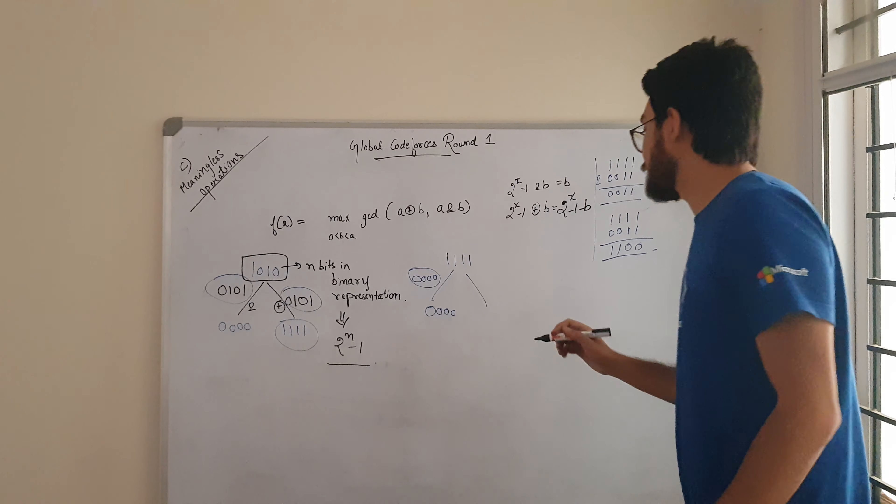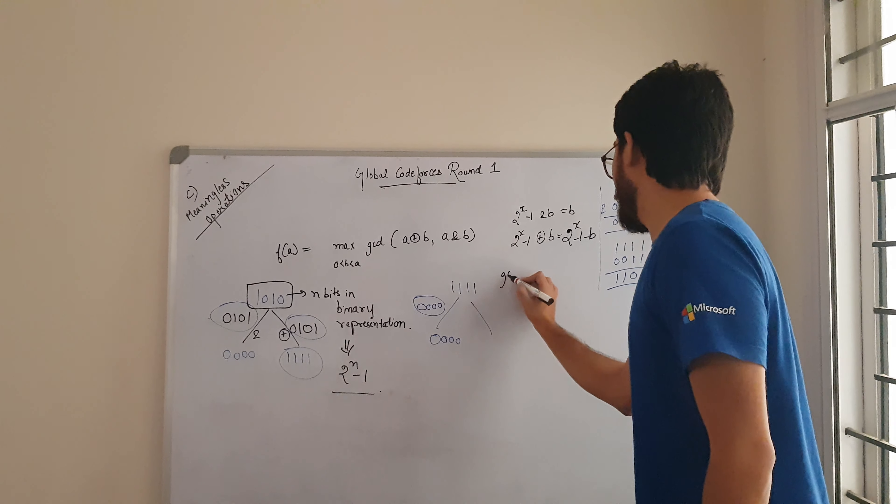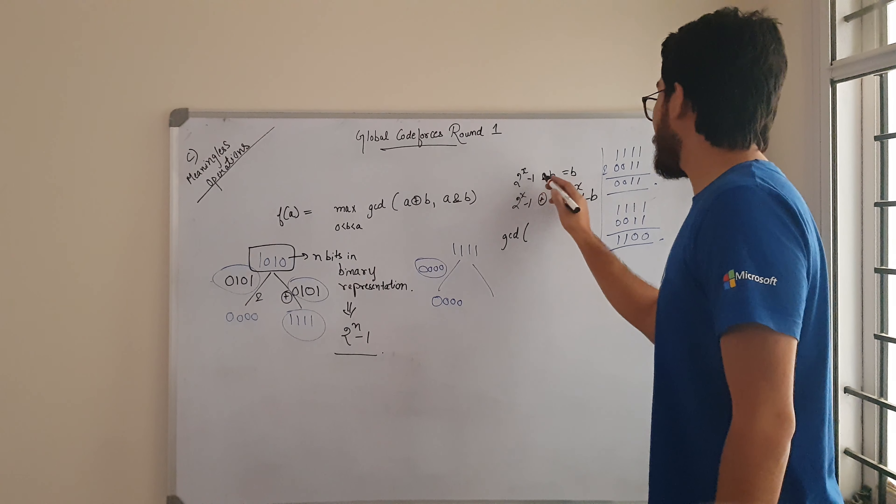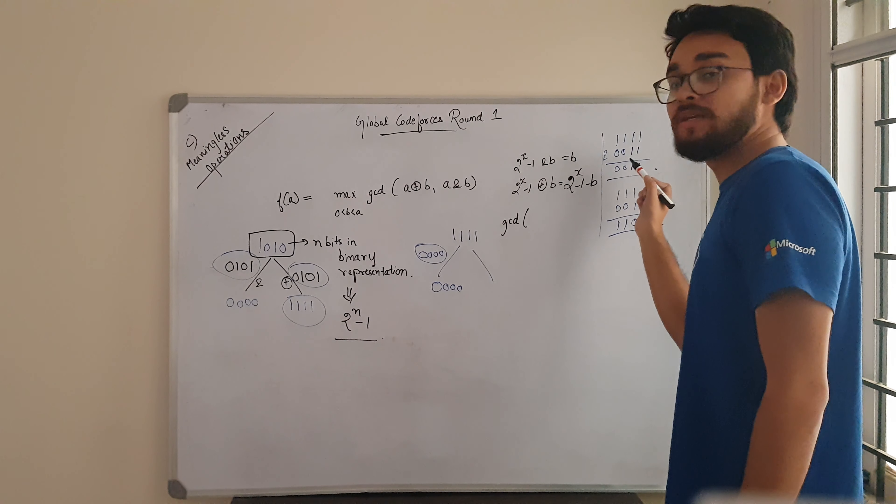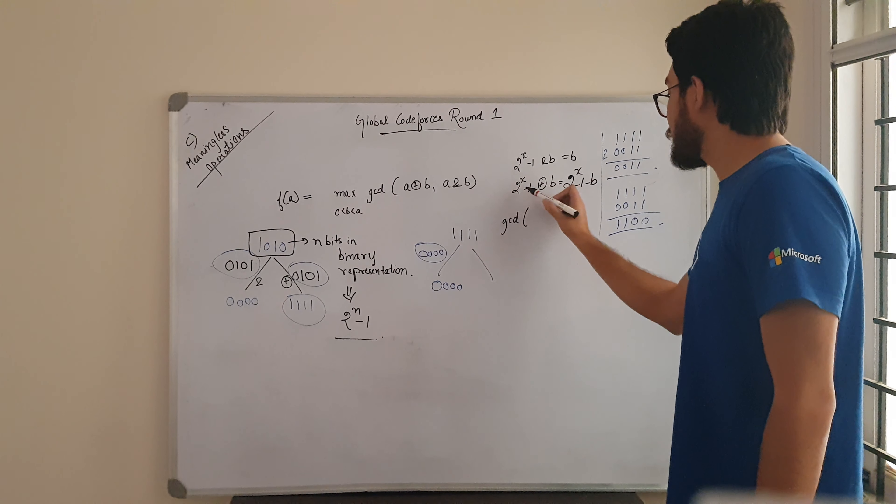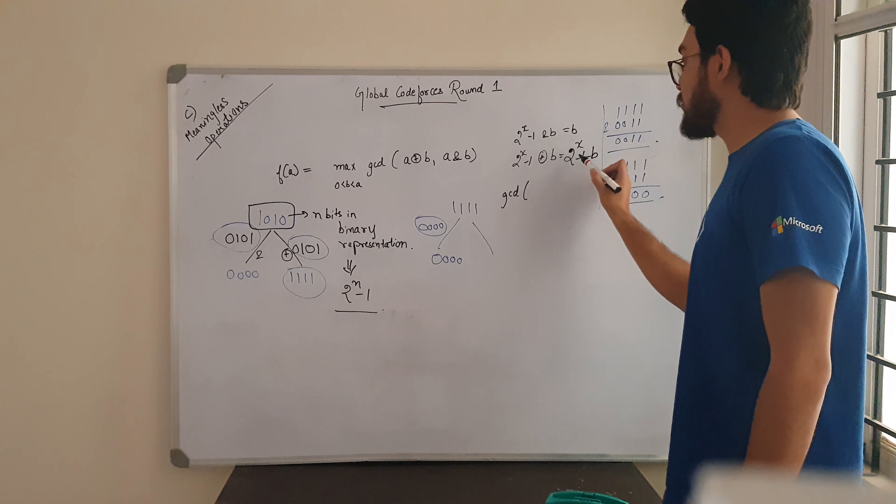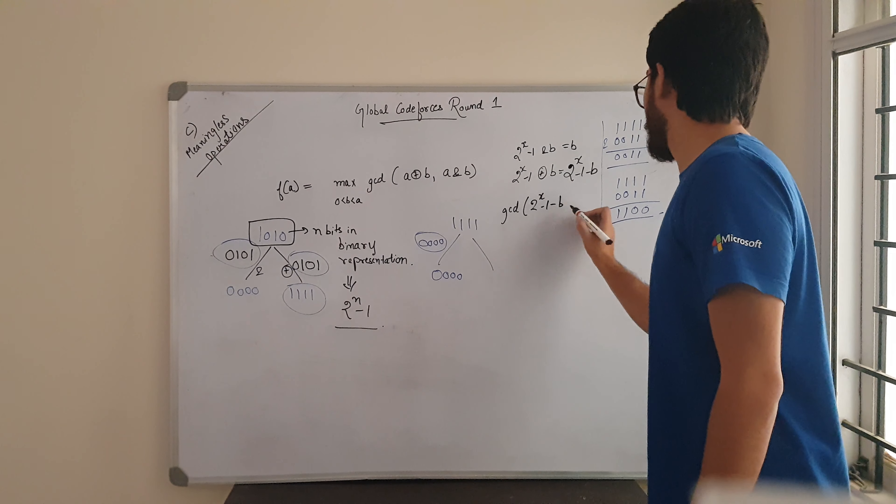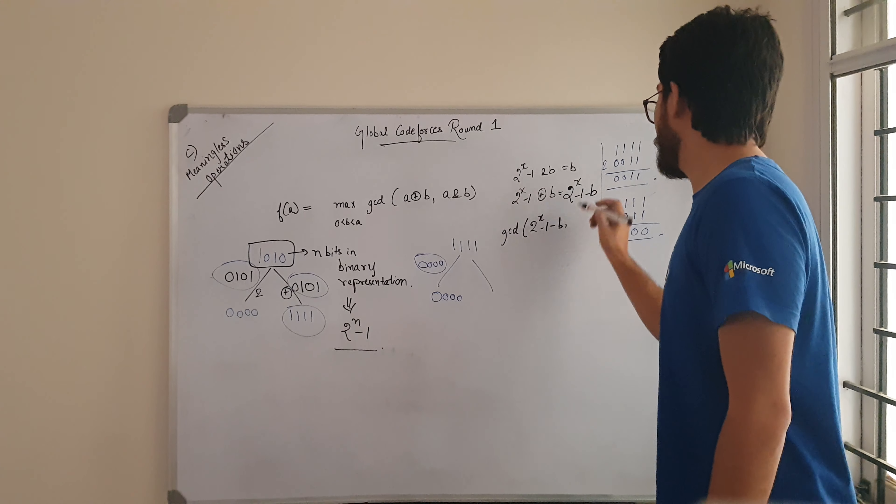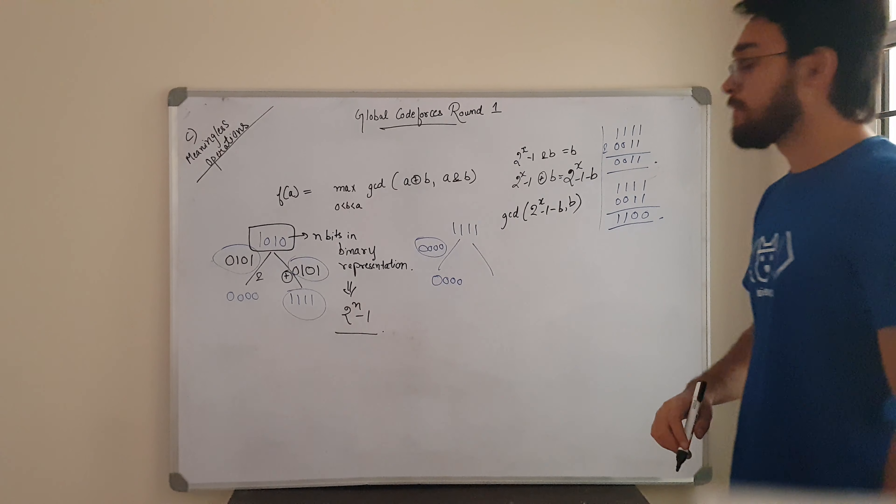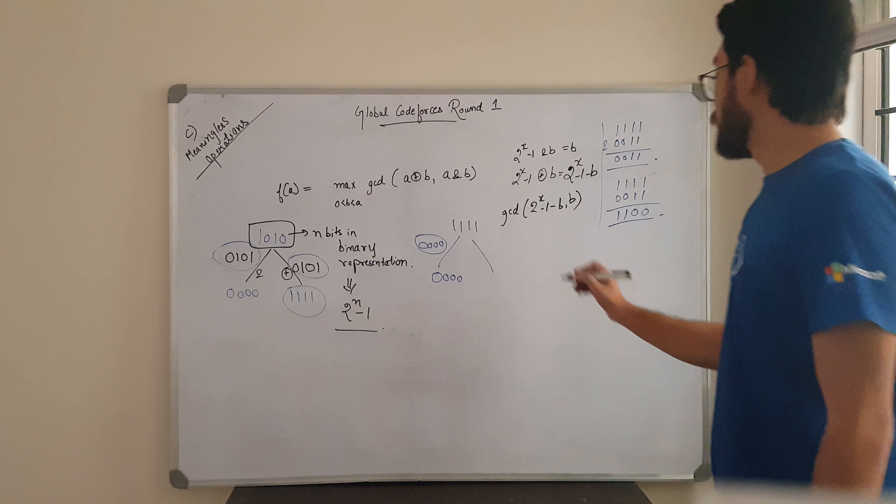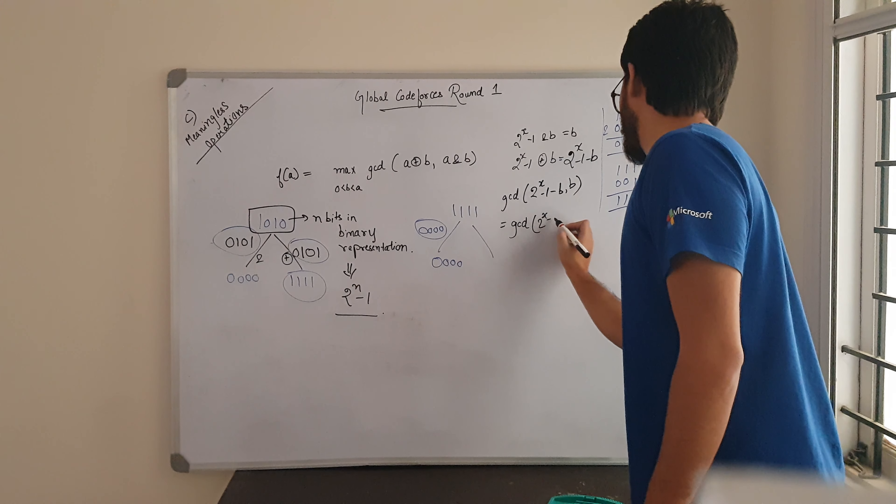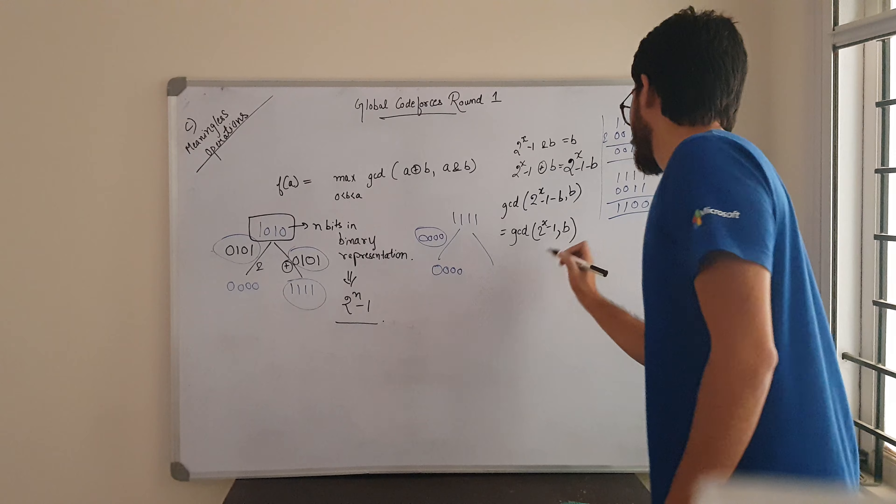So what we want to do is, we want to find GCD of. Now 2 to the power x minus 1 AND with B is equal to B. And 2 to the power x minus 1 XOR with B is 2 to the power x minus 1 minus B. So we want to find GCD of 2 to the power x minus 1 minus B, comma B. Now we can reduce this to GCD of 2 to the power x minus 1 comma B.